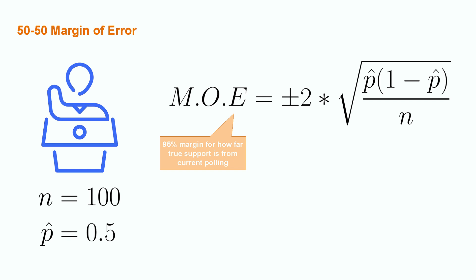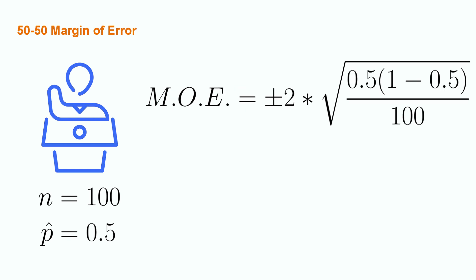The formula will tell us approximately how far around their current polling numbers we can expect the true support to be for the blue candidate. Before plugging this into our calculators, we're going to first play a couple of silly mathematical tricks. First, let's temporarily split our square root of a fraction into two separate square roots. Now, this hasn't done much, but it will let us think about the numerator and denominator a little more independently.